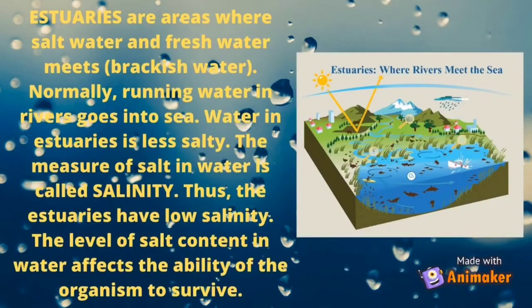These are areas where salt water and fresh water meet, also known as brackish water. Normally, running water in rivers goes into the sea. Water in estuaries is less salty. The measure of salt in water is called salinity. Thus, the level of salt content of water affects the ability of organisms to survive.